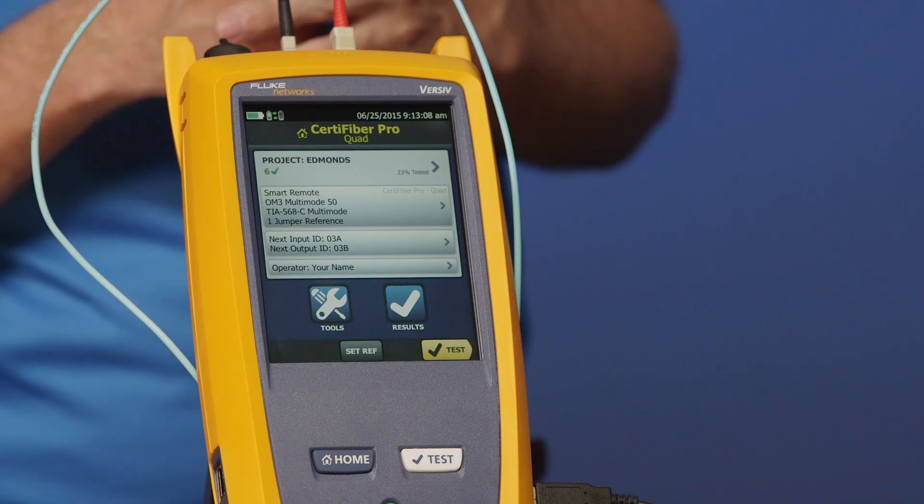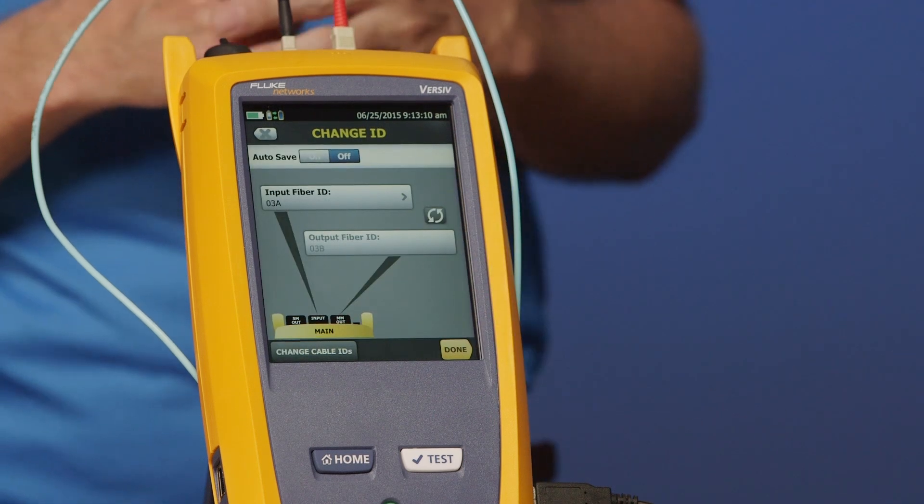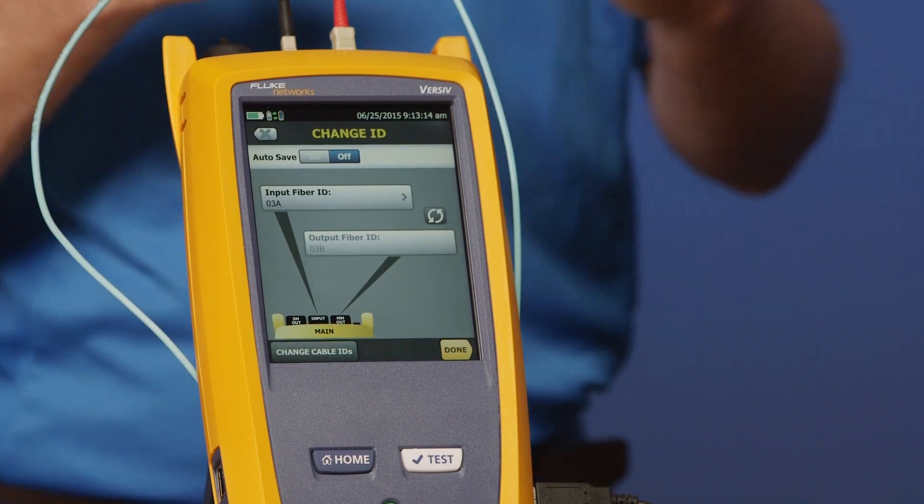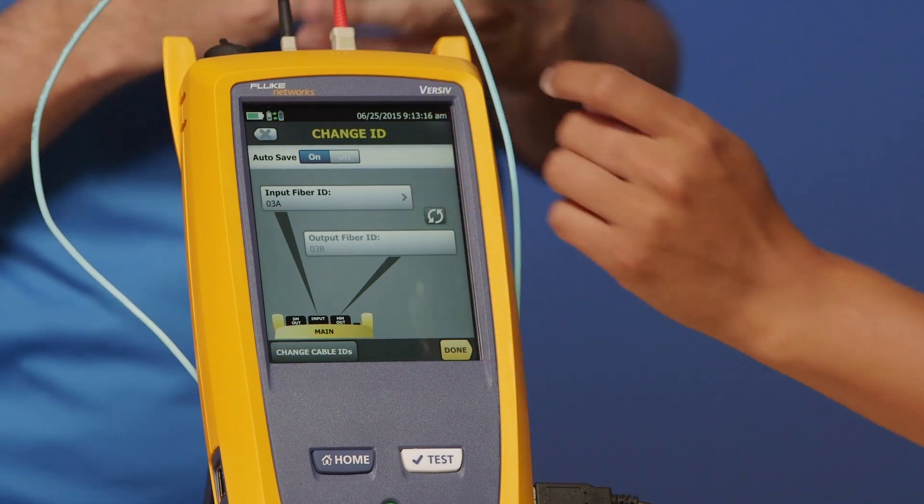Tap the cable IDs. Excellent. Up in the corner here, you're going to see the option to auto-save. Let's turn on auto-save. And done.